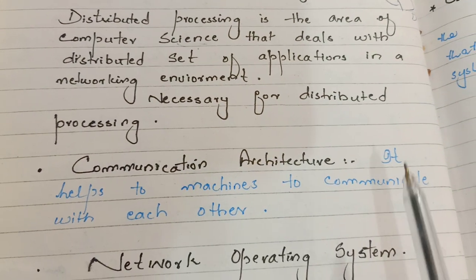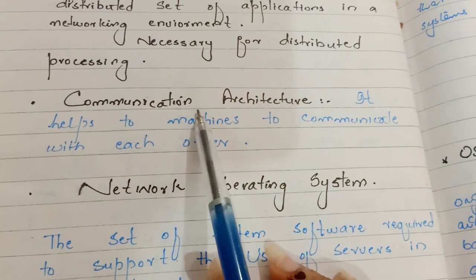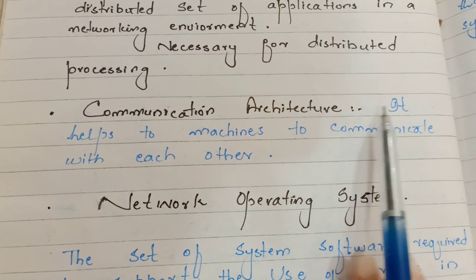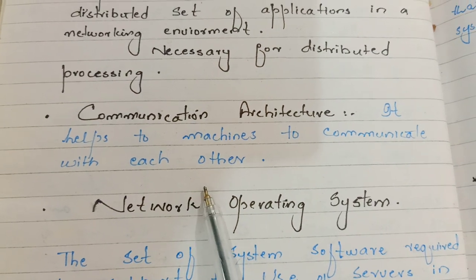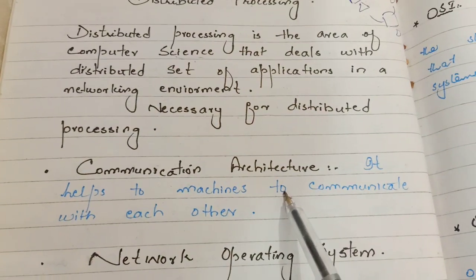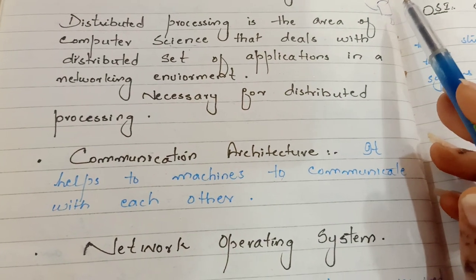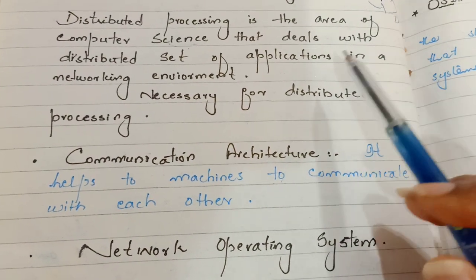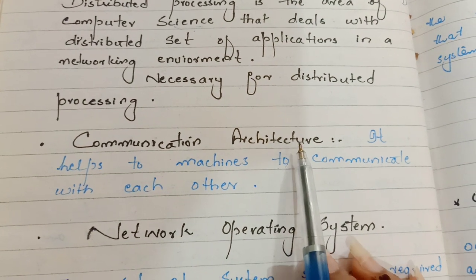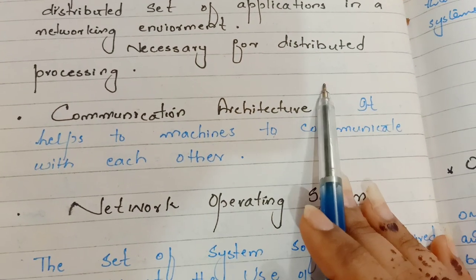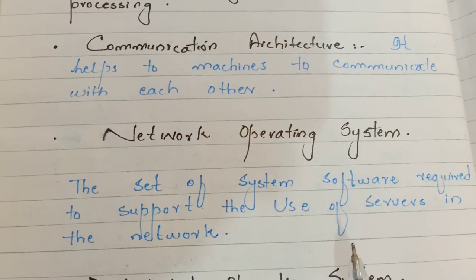The first thing necessary for distributed processing is communication architecture. Communication architecture helps machines communicate with each other. In a networking environment we have different devices connected, so you should have communication architecture so that your different connected machines can communicate with each other.